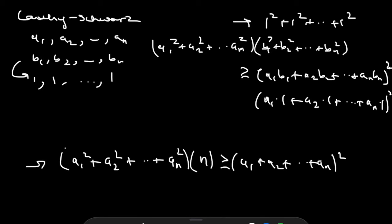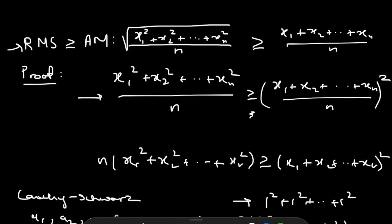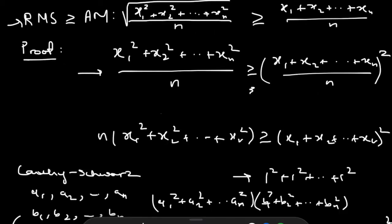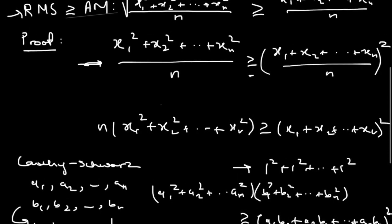By using the Cauchy-Schwarz inequality, we've shown that the root mean square of a set of n numbers is always greater than or equal to the arithmetic mean. We worked backwards — manipulating the desired inequality to arrive at a true statement. In the actual proof, we'd start with this true Cauchy-Schwarz statement, divide by n², then take the square root of both sides — which doesn't affect the ≥ sign since both sides are non-negative. Because all steps are reversible, this proves RMS ≥ AM.